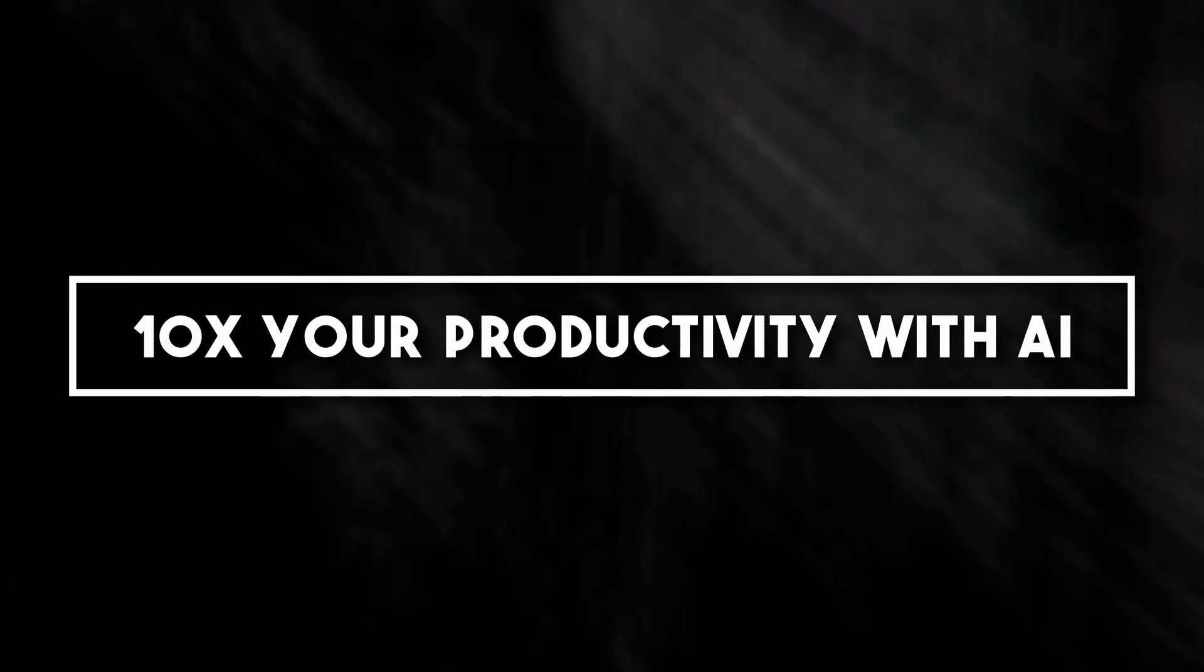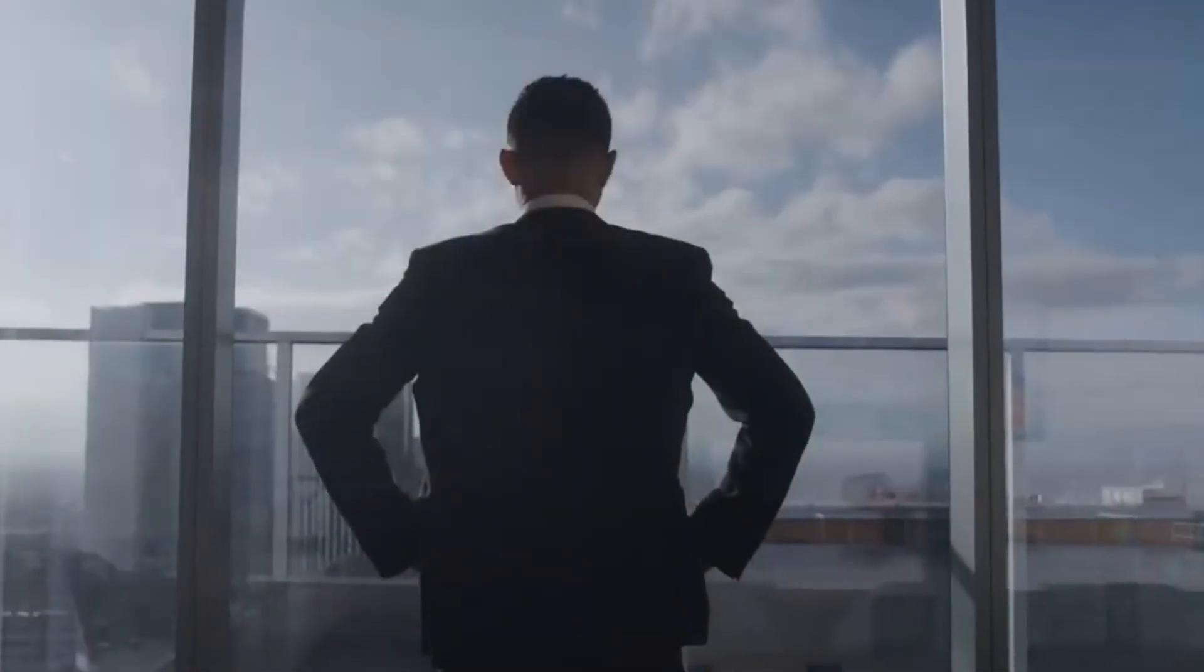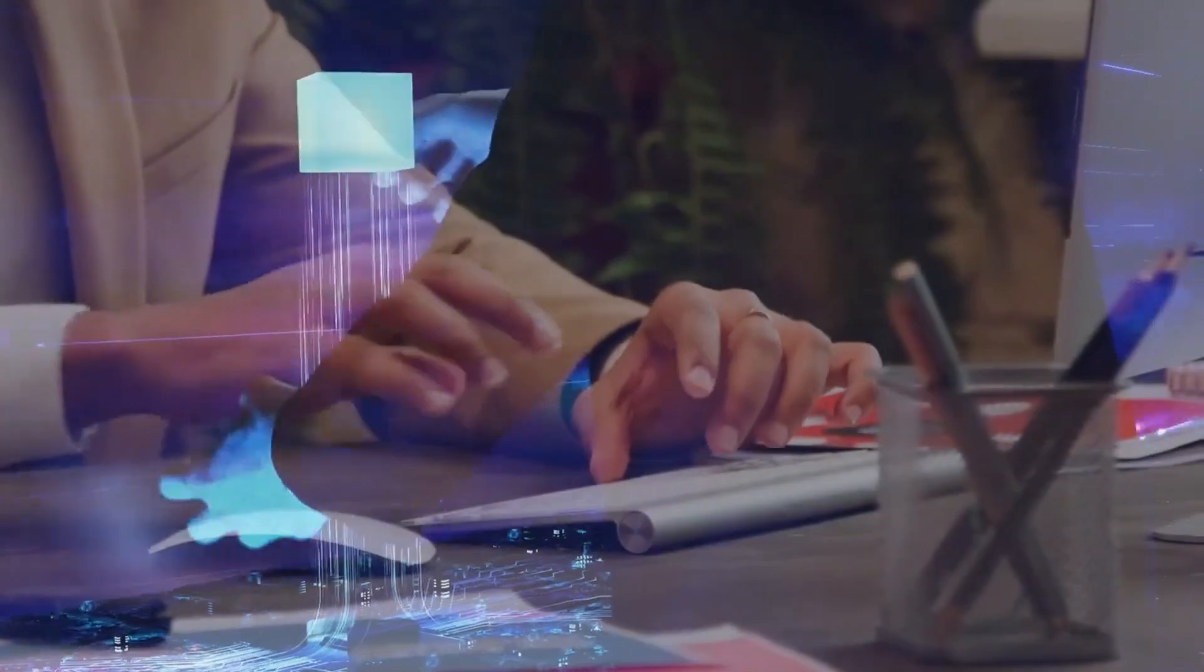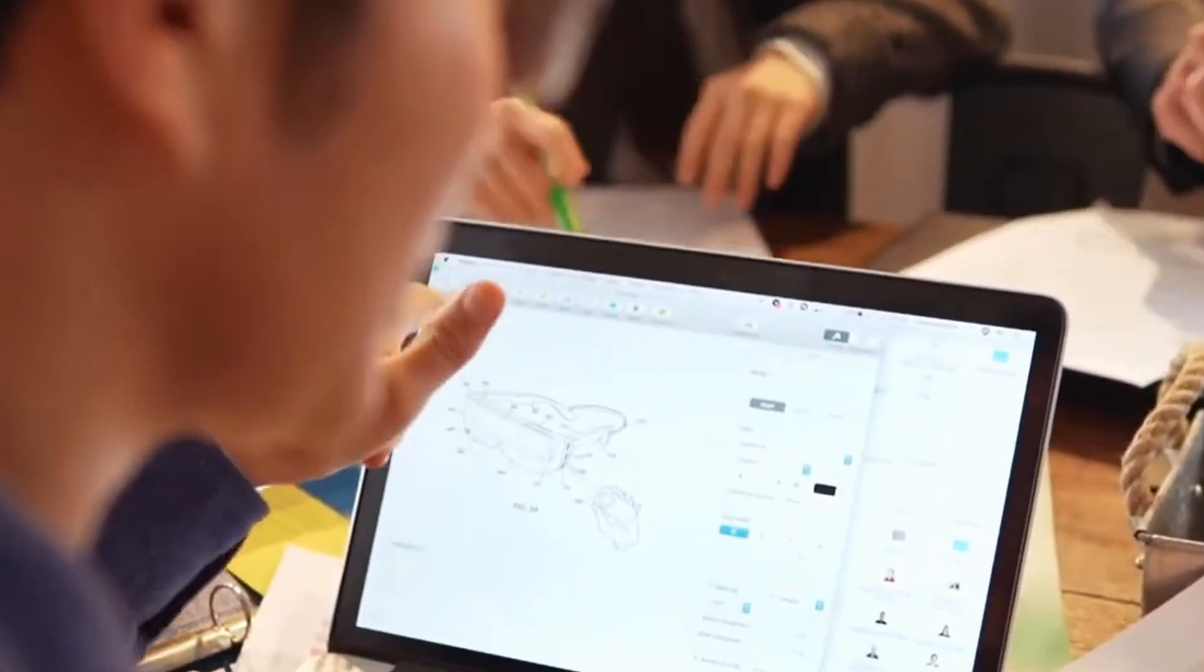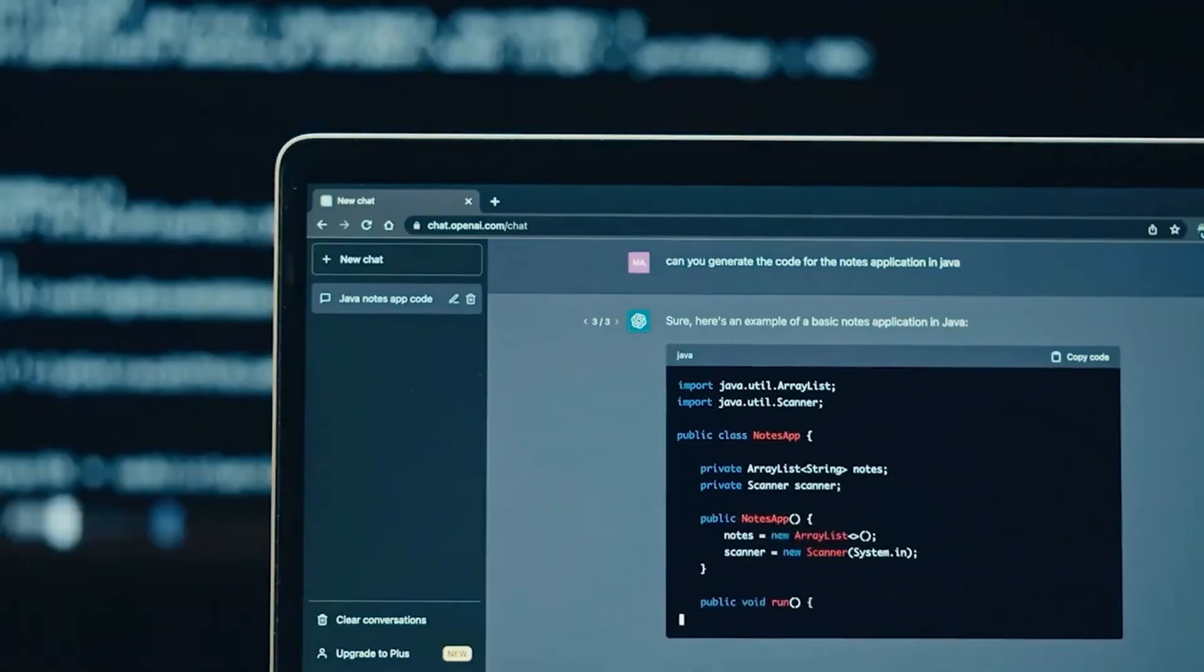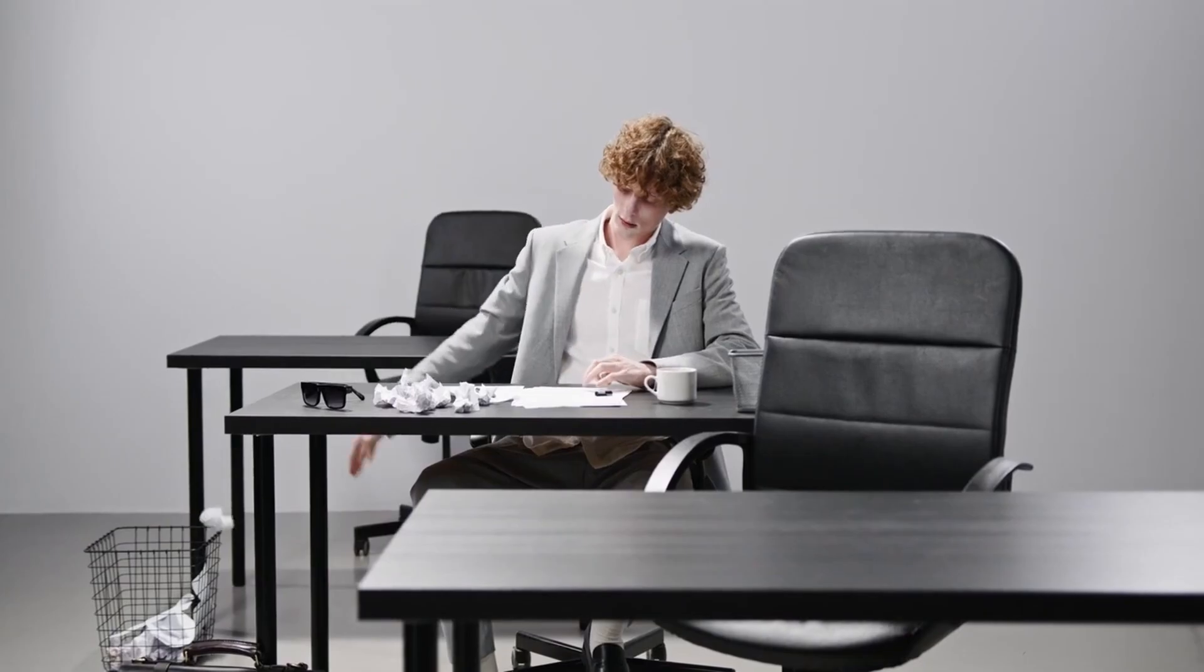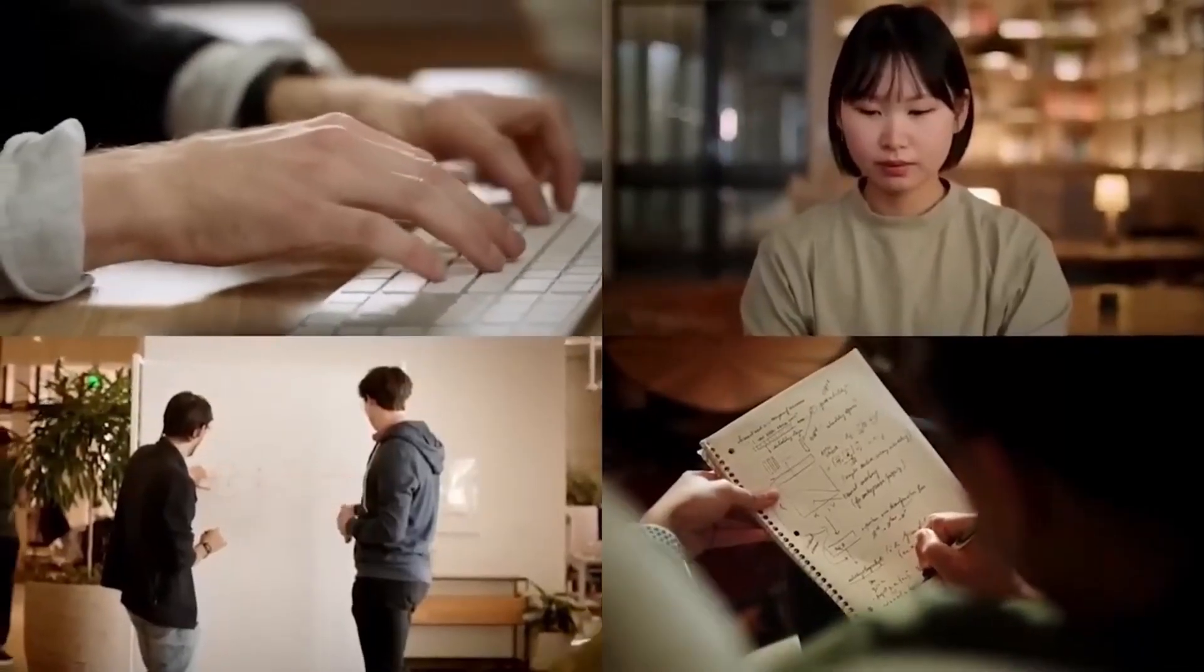Number 3: 10x your productivity with AI. In a world where time is money, productivity is key. Yet humans often find themselves grappling with overwhelming workloads and struggling to keep up with the demands of the modern age. Studies show that humans spend an average of three hours daily on repetitive tasks that could easily be automated. For instance, content managers spend hours researching topics, writing articles, editing, and managing a content team.